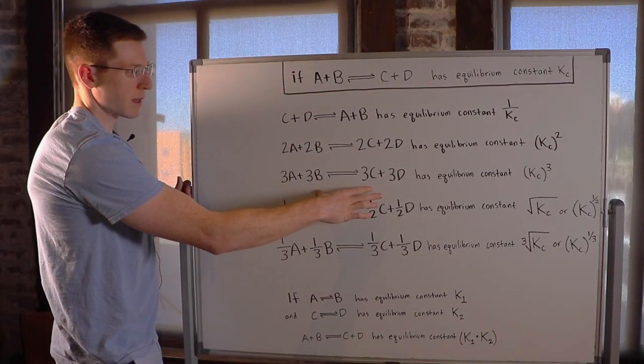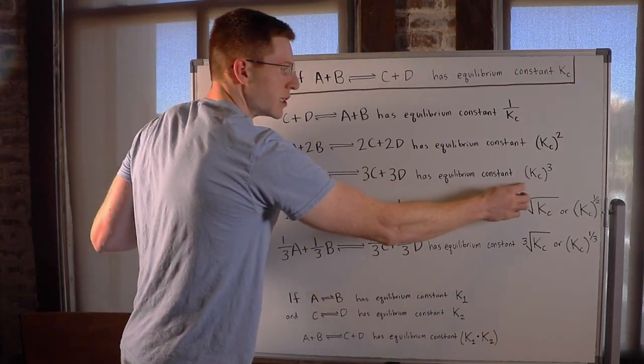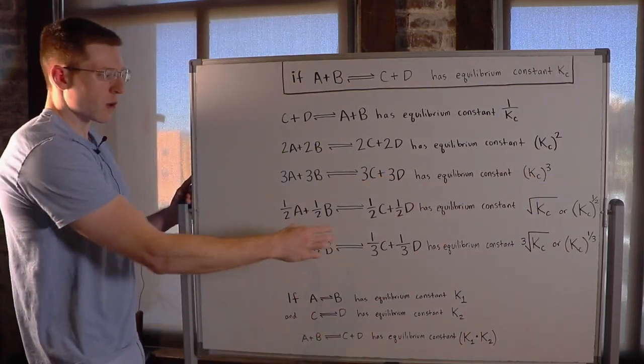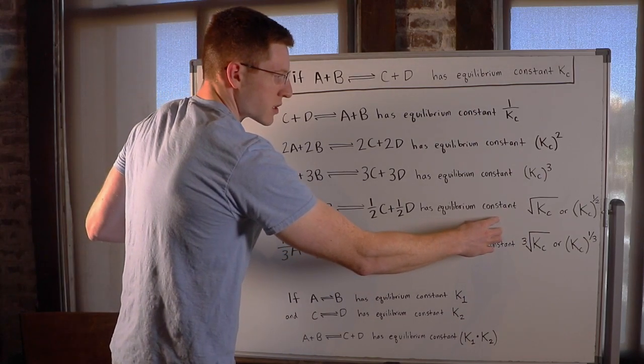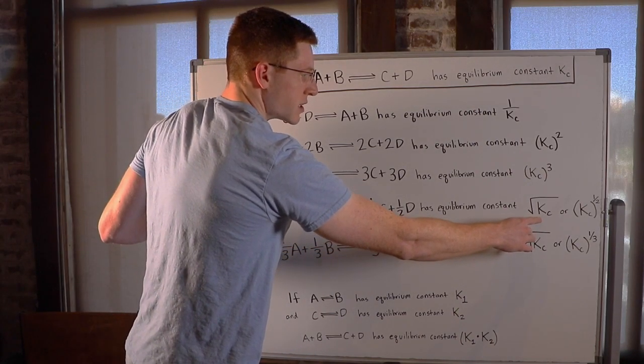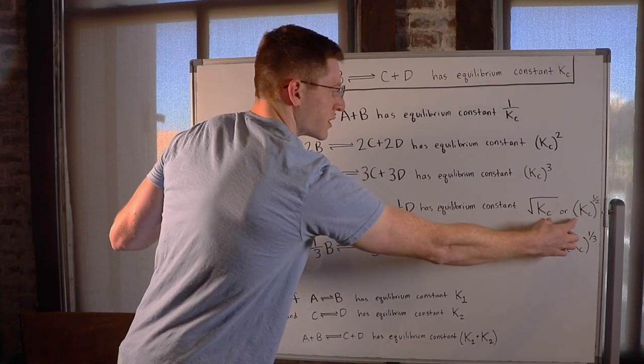And if we multiply everything by 3, it becomes KC cubed. What if we divide everything by 2? Well, then it's got an equilibrium constant of the square root of KC, or KC to the 1 half. These are the same thing.